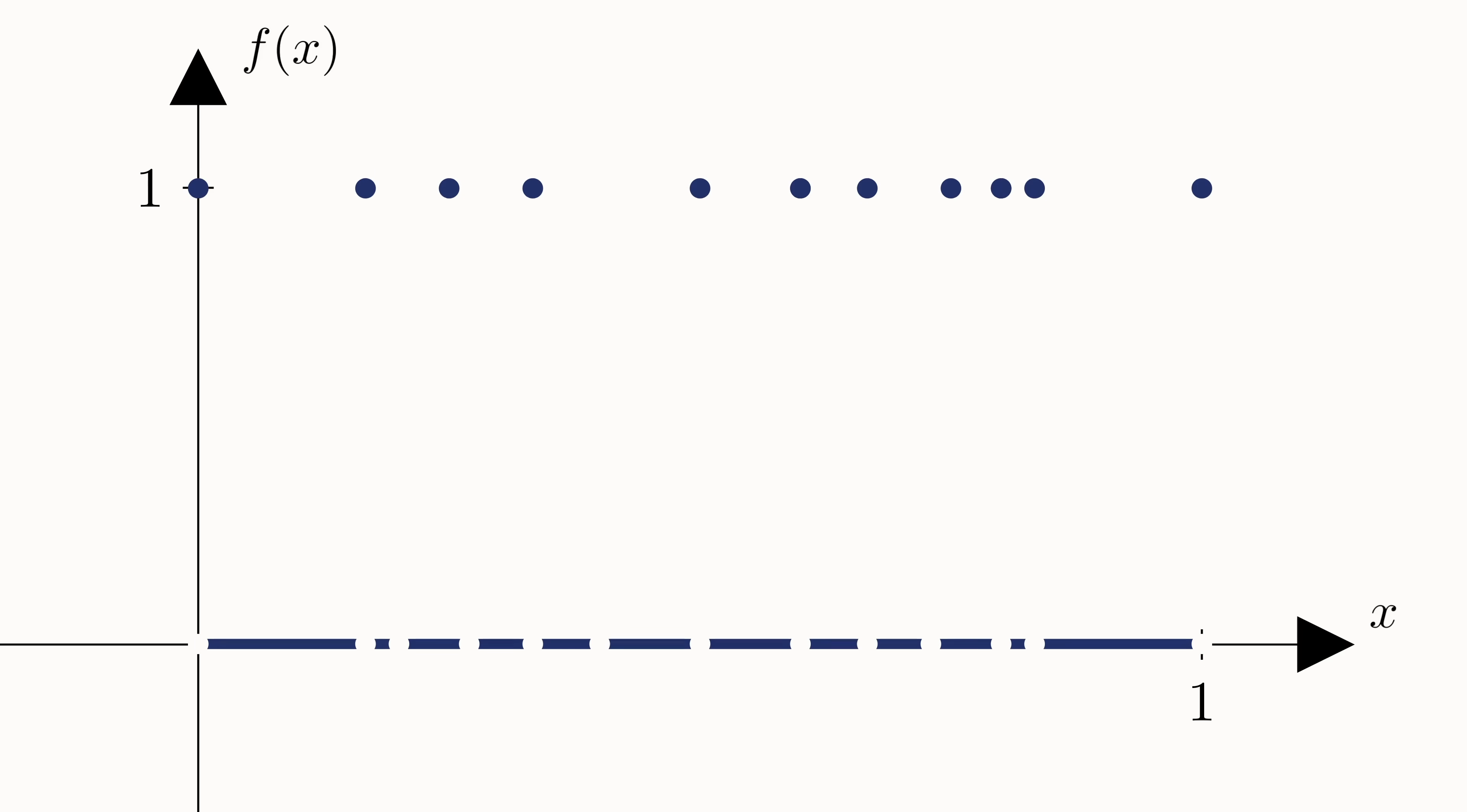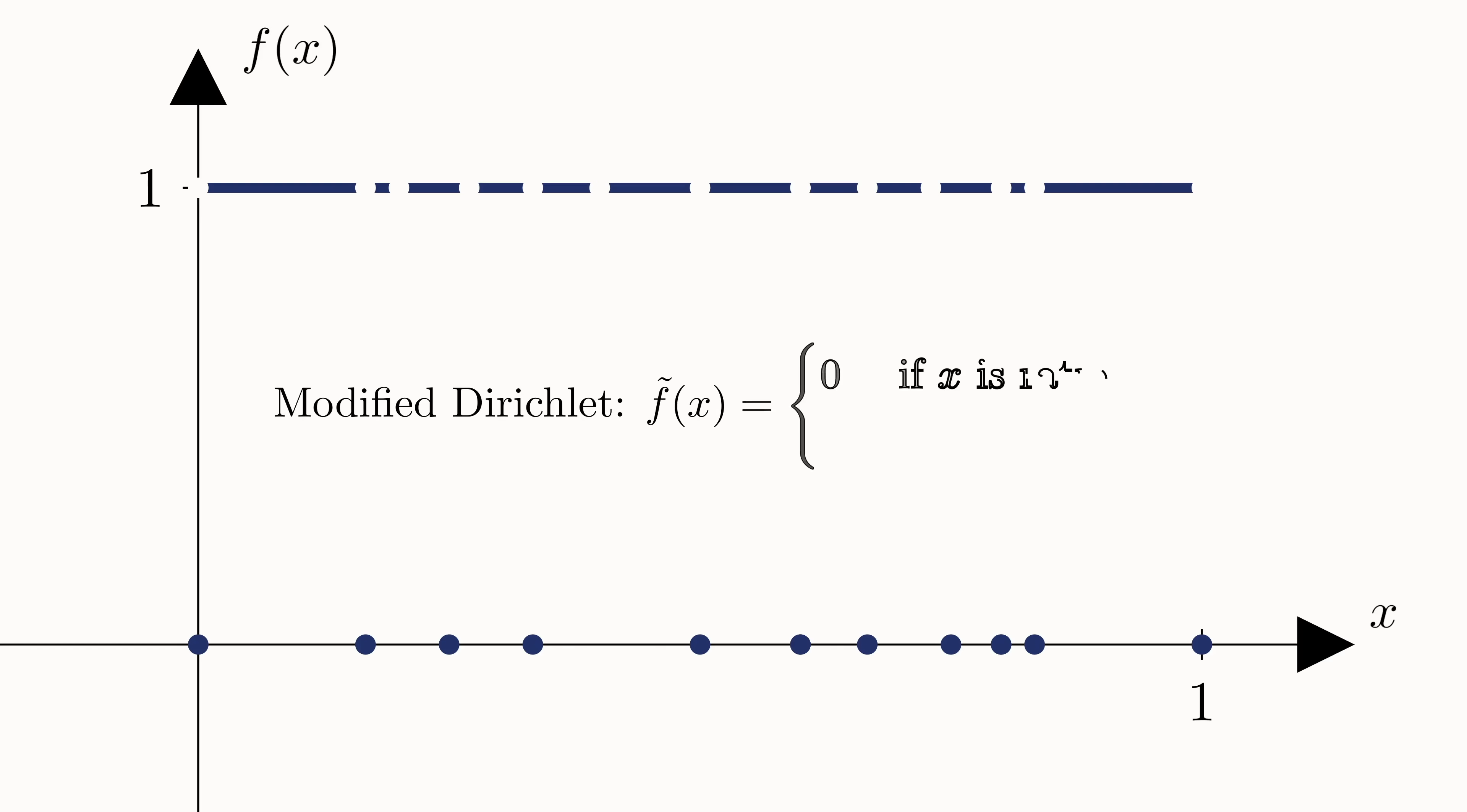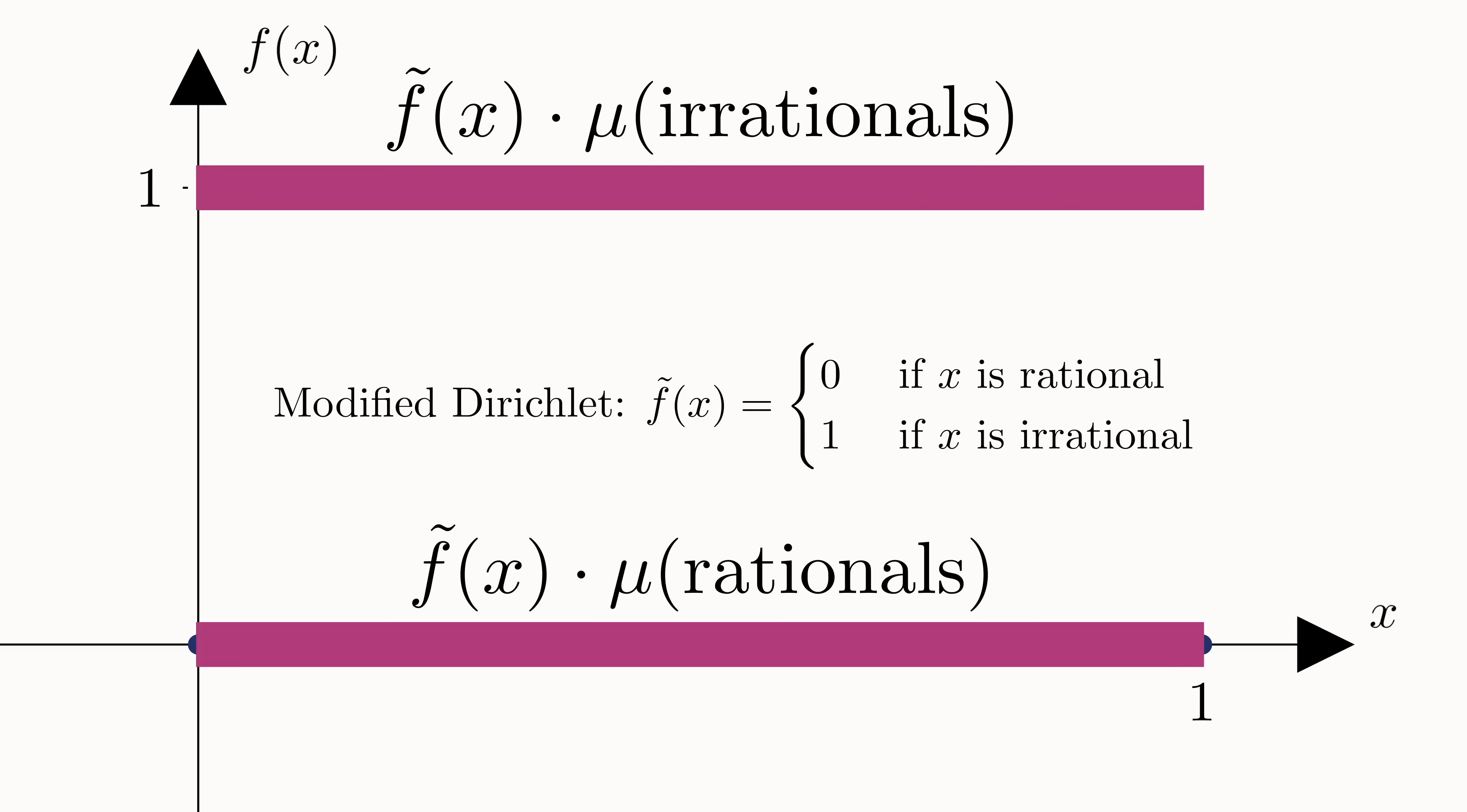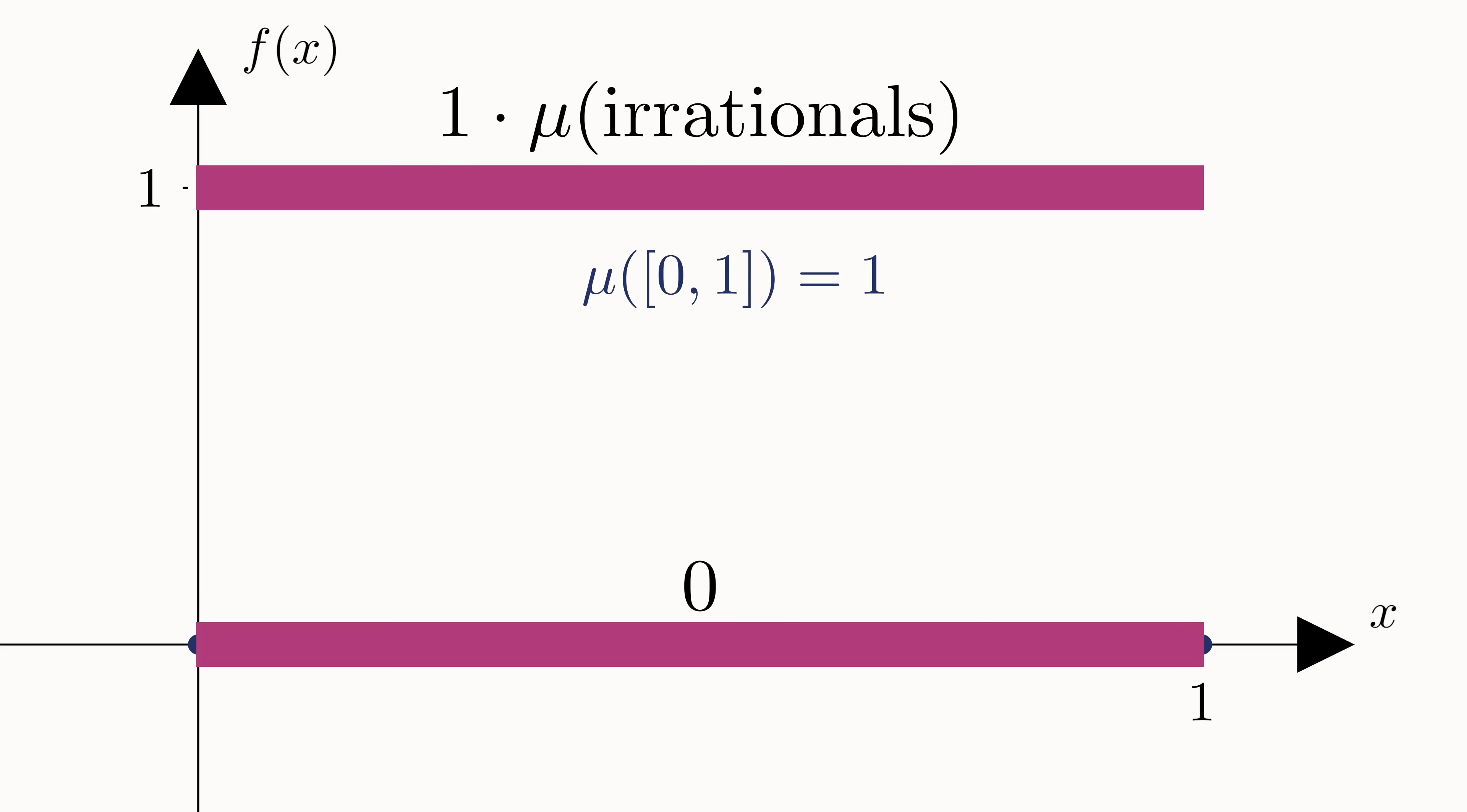If we slightly change the function so that it was zero at all the rational points, but one at all the irrational points instead, then the integral would change as follows. The rational contribution would be zero, but the irrational contribution would now be whatever the length of the irrationals is.